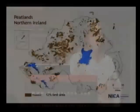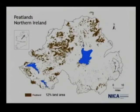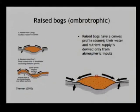Peatlands are obviously very prevalent in the landscape in Ireland. This is just a distribution map from the north of Ireland, where I work. It's actually only one particular type of peatland that is useful for the paleoclimate work. These are the so-called raised bogs, or ombrotrophic bogs, as they're known in the scientific literature. These are characterized by a very pronounced domed surface.